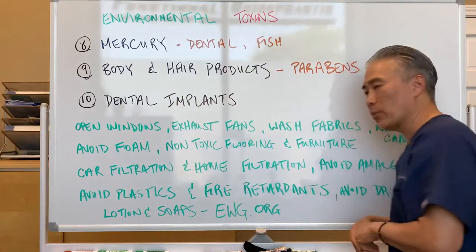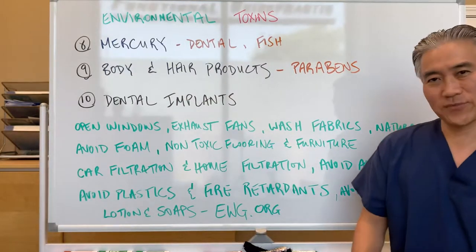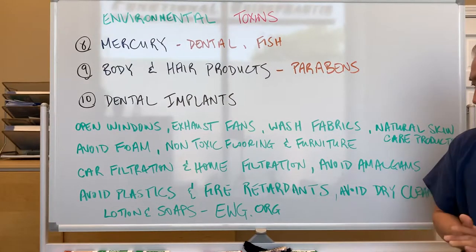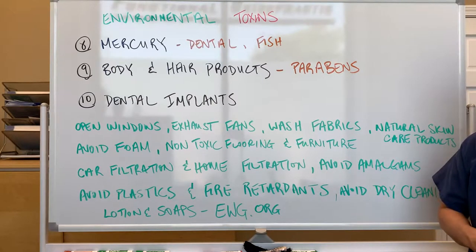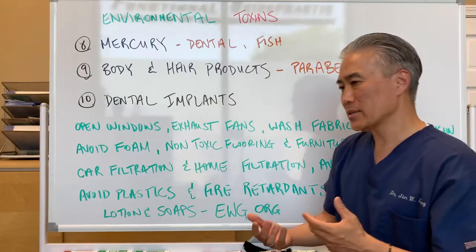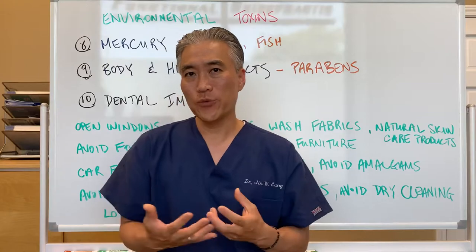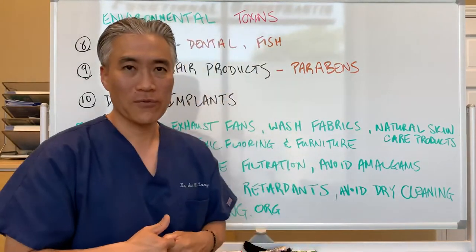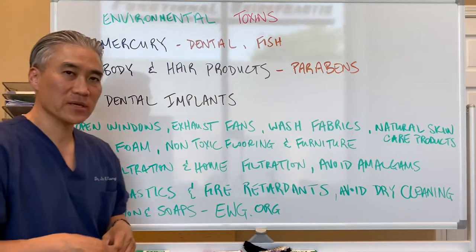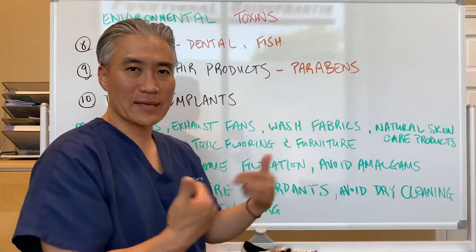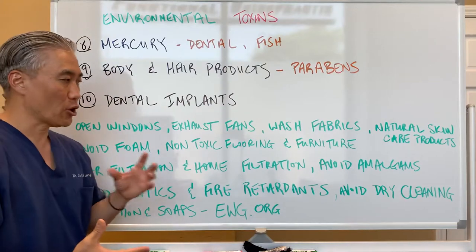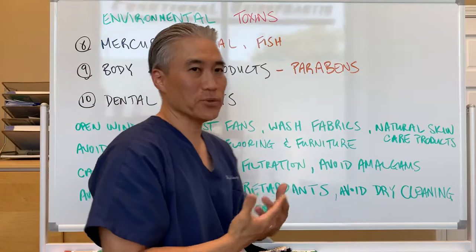Another recommendation is to avoid foam — foam mattresses, foam pillows, foam inserts, foam furniture. Avoid them. You also want to use non-toxic flooring like natural wood, and natural furniture that doesn't use a lot of these chemicals. You can actually smell chemicals gassing off new furniture when you bring it in. You want to have a good car filtration system, and in heavy traffic recirculate the air within the car rather than taking it in from outside. A good HEPA filter with carbon in it at home will help minimize air pollution and VOCs within the house.